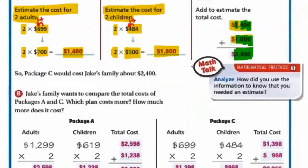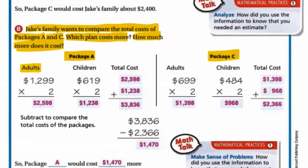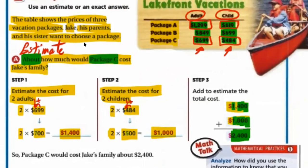Jack's family wants to compare the total costs of package A and package C. Which plan costs more? How much more does it cost? To compare, we need the total cost of both packages. For package A, the cost of 1 adult is $1,299 and the cost of 1 child is $619. We multiply each by 2 because we have 2 adults and 2 children.